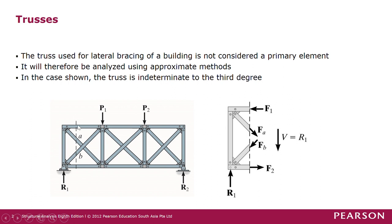In this case shown here, this truss is indeterminate to the third degree. Let us revise on how to determine the indeterminacy. To determine indeterminacy, we have to look at B plus R and also 2J, where B is the number of truss members, R is the number of reactions, and J is the number of joints in the truss system.